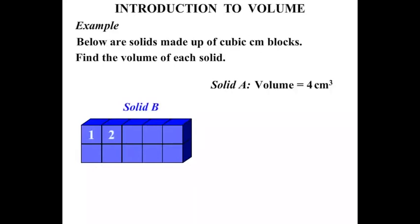1, 2, 3, 4, 5, 6, 7, 8, 9, 10. So we would say that solid B has a volume equal to 10 cm³.